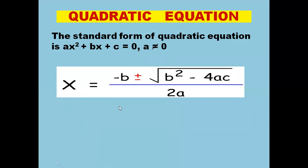x equals to minus b, plus or minus the square root of b² - 4ac, whole divided by 2a. Here b is the coefficient of x, a is the coefficient of x², and c is the constant. So this is how we find the value of x using the formula: x = (-b ± √(b²-4ac)) / 2a.